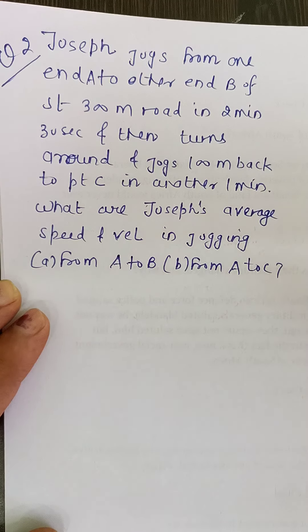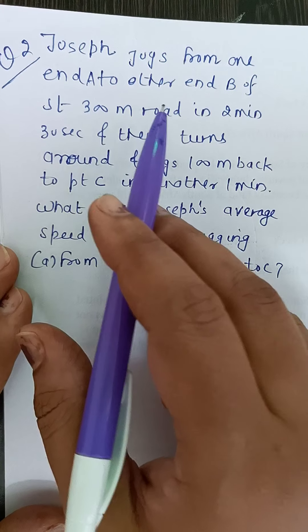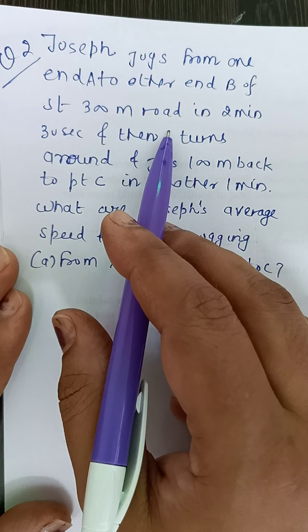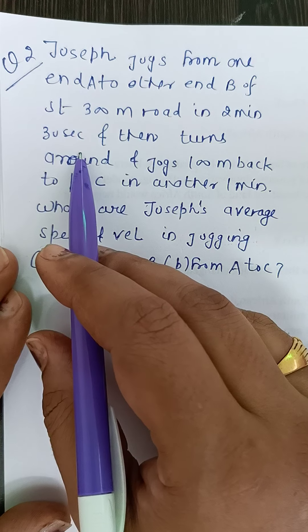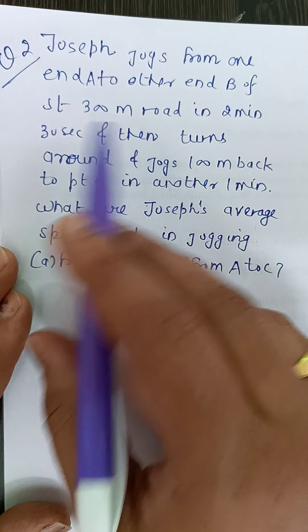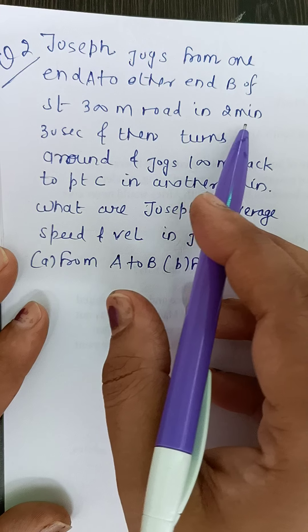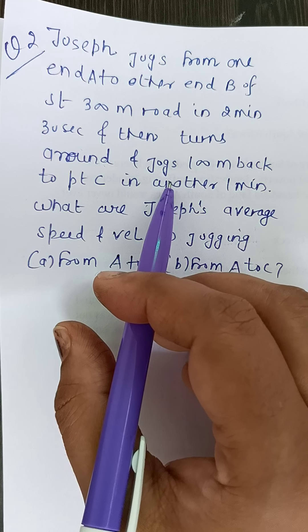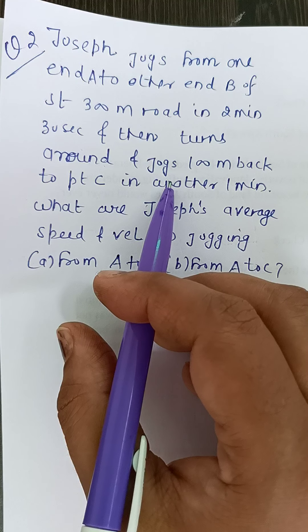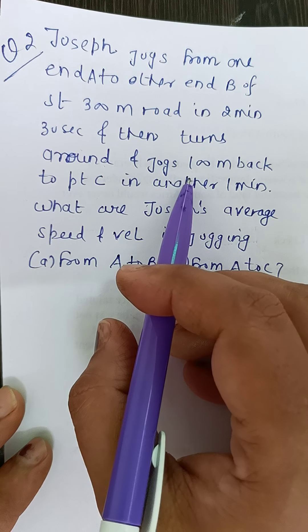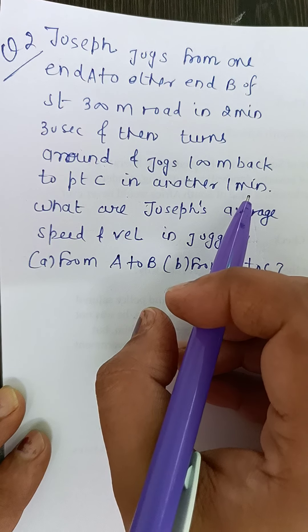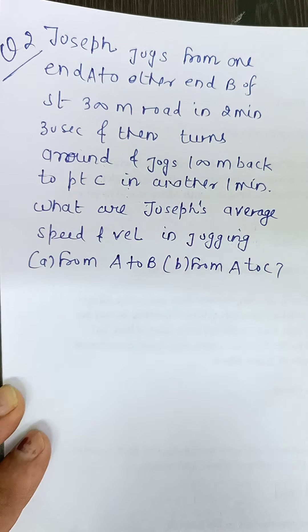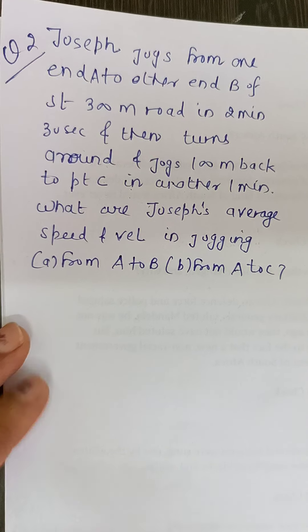I hope this numerical is clear to you, because we have to correlate number of rounds and distance and displacement. Now in next numerical, statement is: Joseph jogs from one end A to other end B of a straight 300 meter road in 2 minute 30 seconds. Then turns around and jogs 100 meter back to point C in another 1 minute. What are Joseph's average speed and velocity in two intervals, from A to B and from A to C?